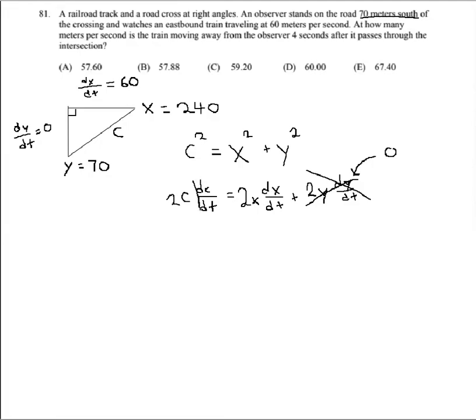And I'm trying to get dc/dt on its own. That's what I'm trying to solve for. So I'm going to go ahead and divide both sides by 2c. That'll help me simplify this a little bit. So I'm going to end up with dc/dt equals, and then if we look, our 2s are going to cancel, and I'm going to end up with x over c times dx/dt.